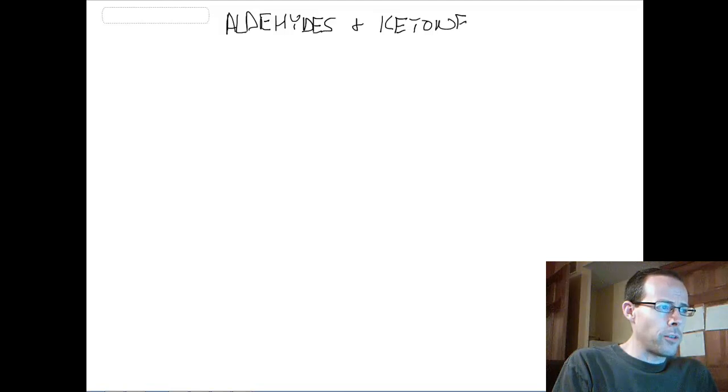Again, we're kind of talking about functional groups. We have just halogens, and we talked about hydroxy as the functional group for alcohols. Aldehydes and ketones have the same functional group, and it's known as the carbonyl group.